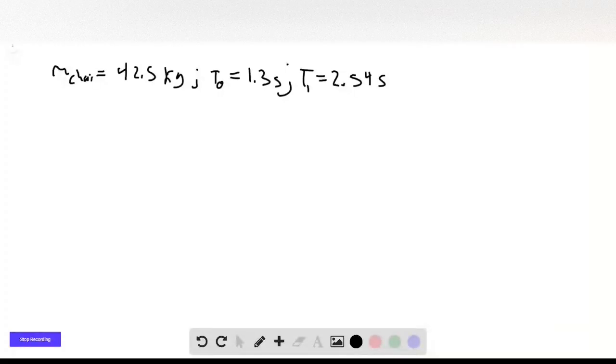Okay, here we take advantage of the fact that the period of oscillation for a spring doesn't depend on gravity. We know that T equals 2π times the square root of m over k.